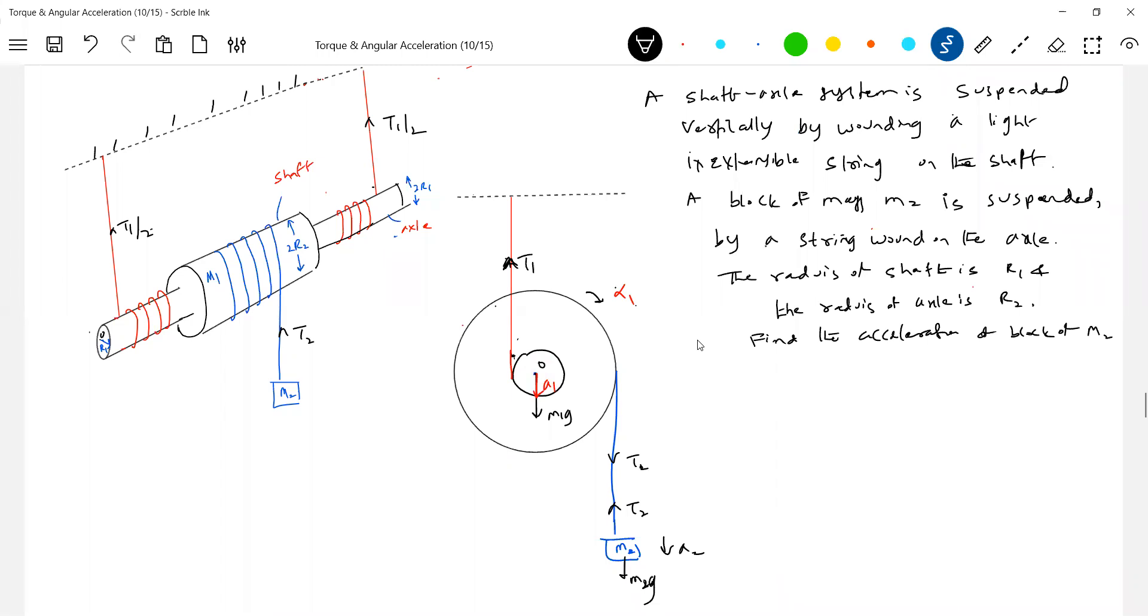Why should it move down? I think it is not suspended, no? The string is wound. So, what I do, I'll take a string and I'll wound it. Then another string, blue color string is wound on the shaft and a block is suspended. So, this is what happens here. So, let's take this particular point. There's a point P2. There's a point P1. Let's write all the possible equations.